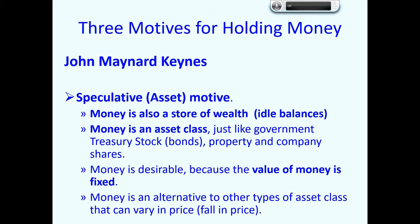John Maynard Keynes introduced a further motive for holding money, which he referred to as a speculative or asset motive. Keynes recognized that people can also hold money as a store of wealth — these are idle balances held for possibly a considerable period of time, because people prefer to hold their wealth in money rather than other assets which they believe may fall in value. Keynes believed that money is an asset class, just like government treasury stock (bonds), property and company shares. Money is desirable because the value of money is fixed, whereas the price of other assets may fall.